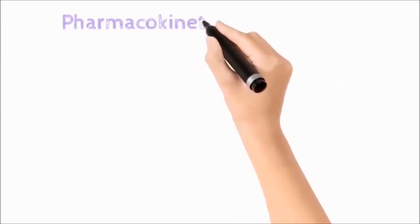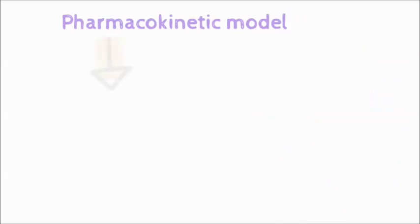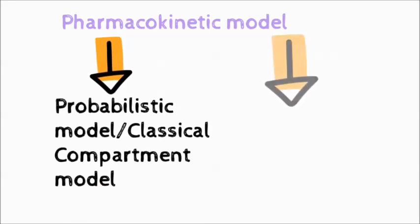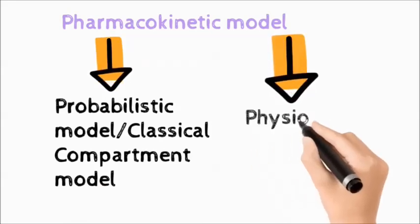Pharmacokinetic Model is further divided into two types. Number one is Probabilistic or Classical Compartment Model. Number two is Physiological Model.